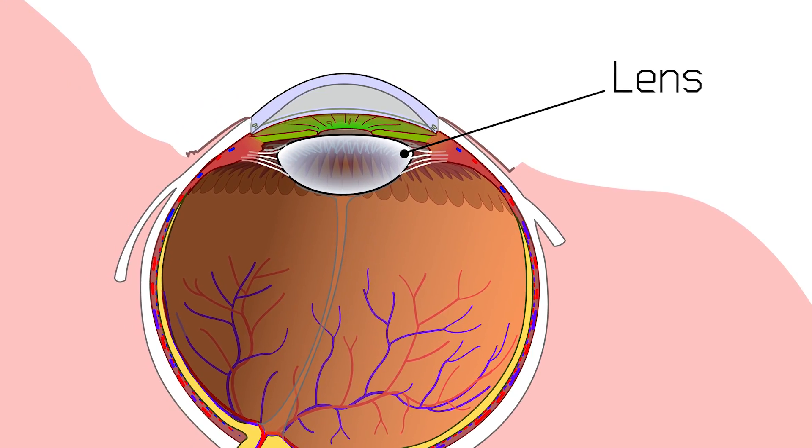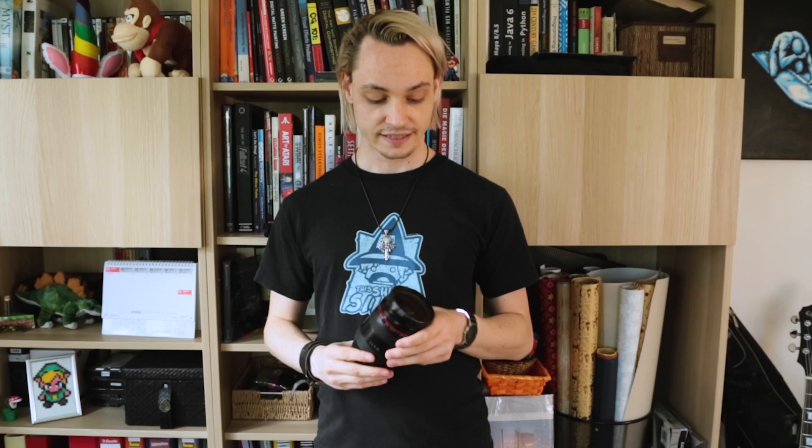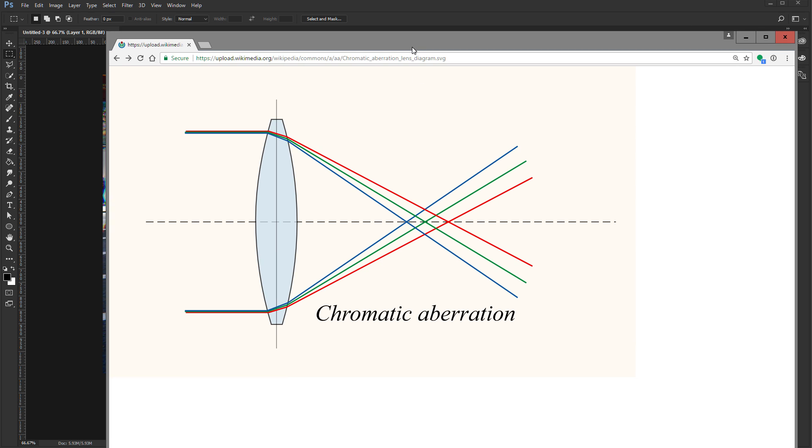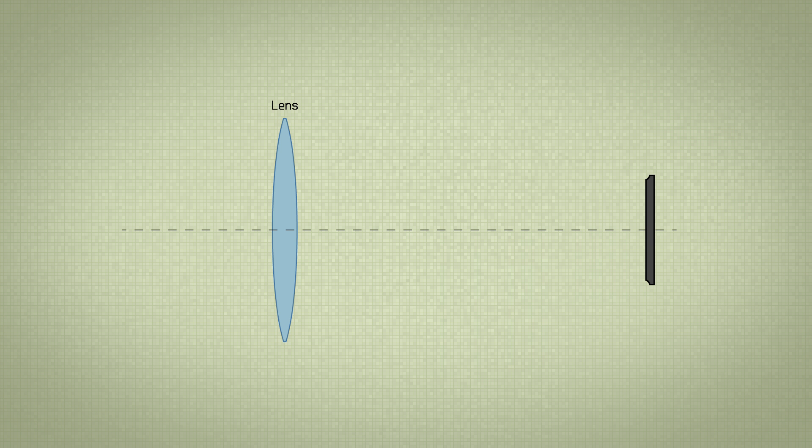While our eyes are made up of a single lens, camera optics such as this—this is a zoom lens—are made up of multiple lens elements. If you've watched my previous video on chromatic aberration, you might be familiar with this diagram of a lens. In principle, it works like this.